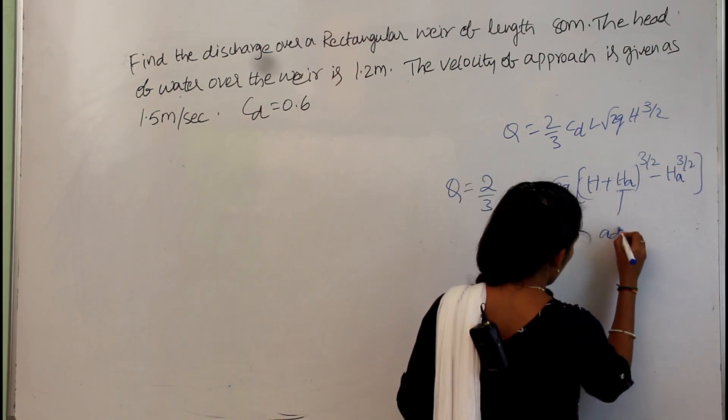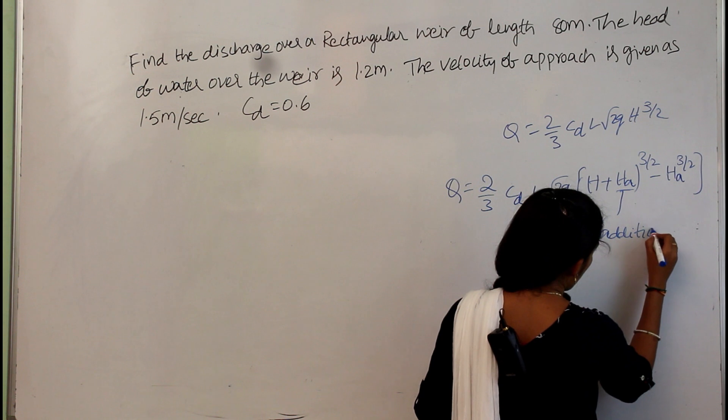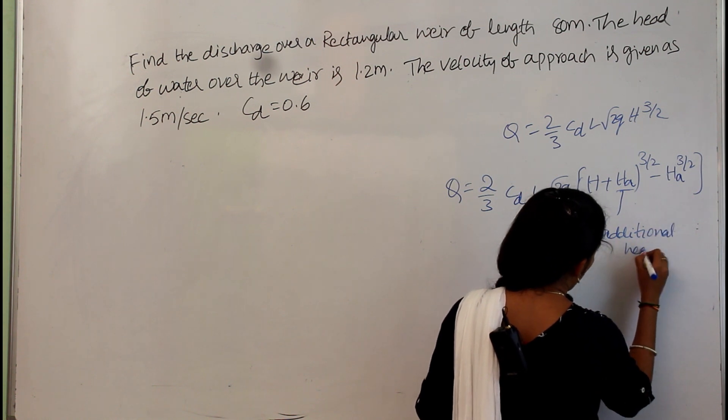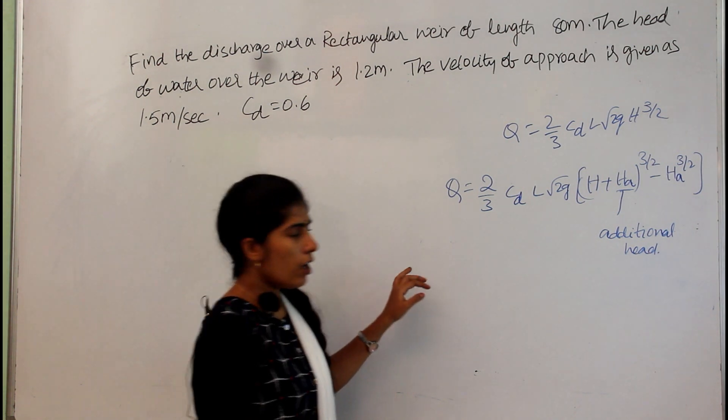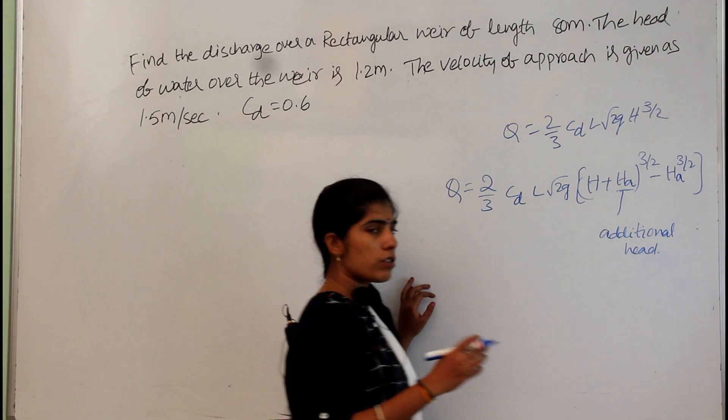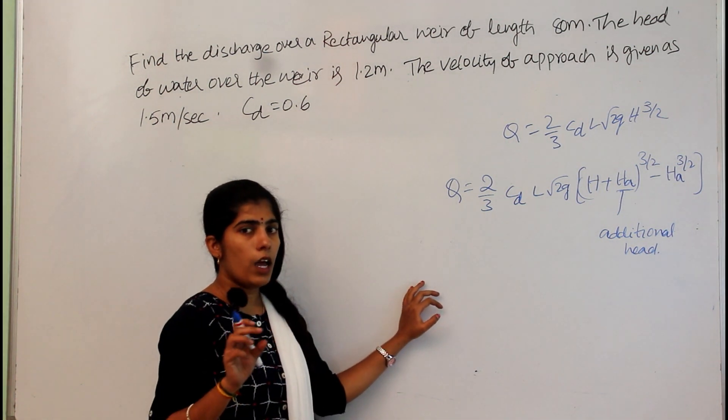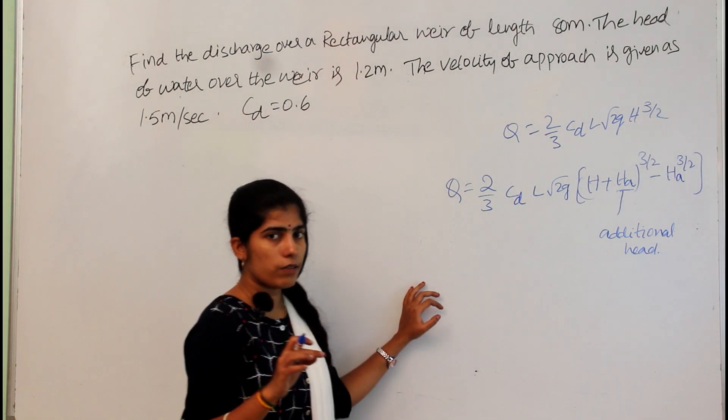This ha is the additional head. Why this additional head is obtained? This is due to the velocity approach. Due to the high velocity, some additional head will be present at the top of the liquid surface.